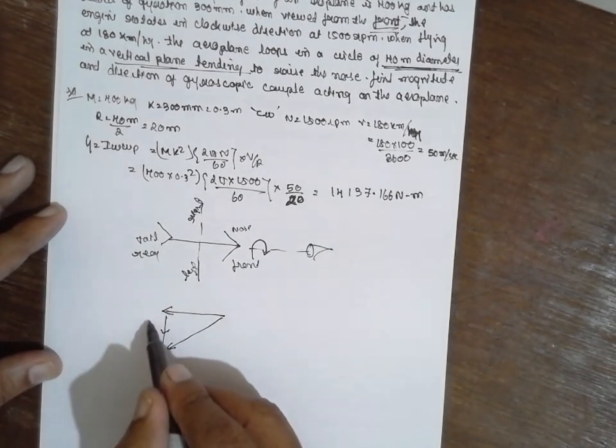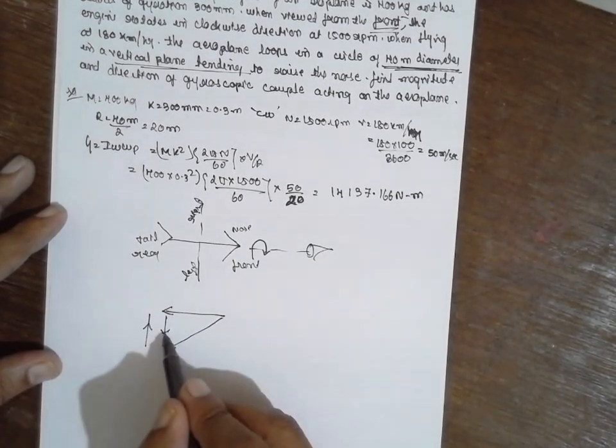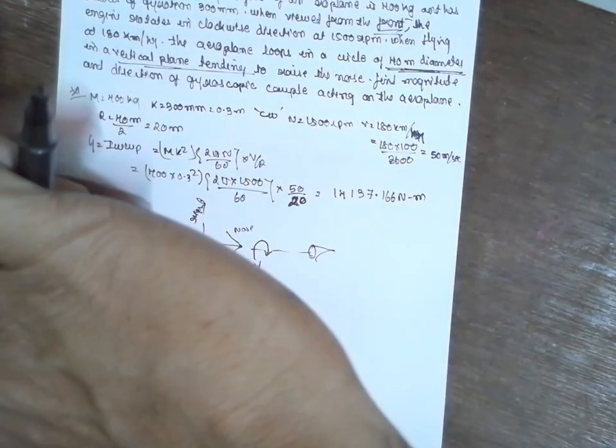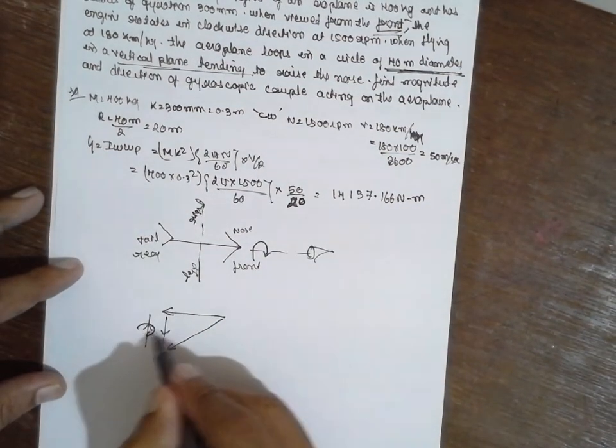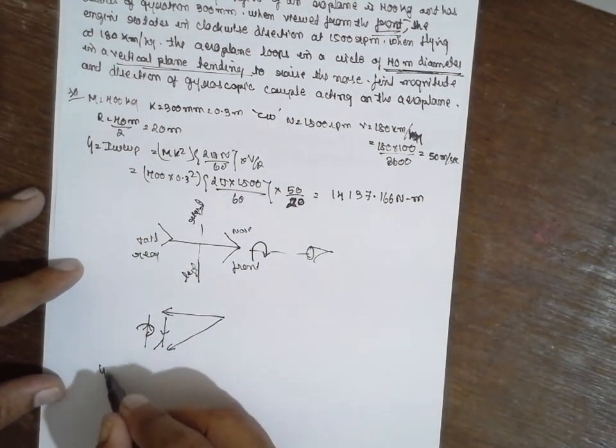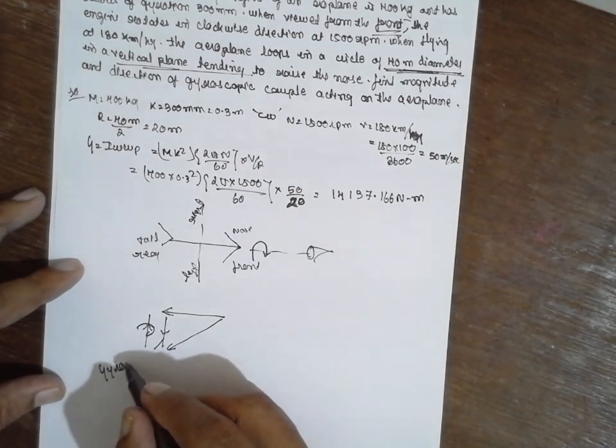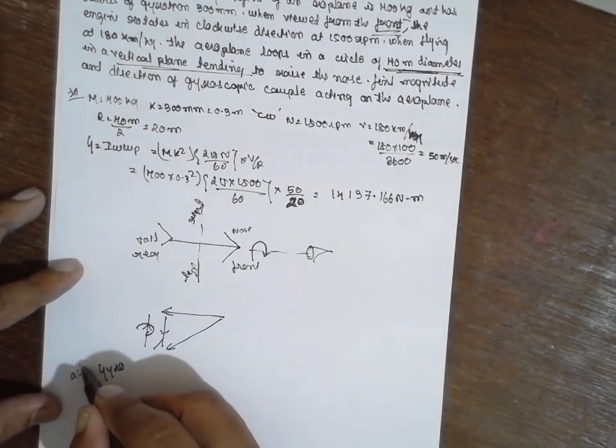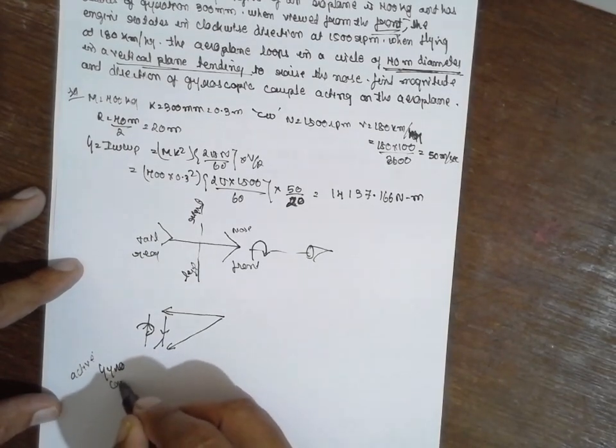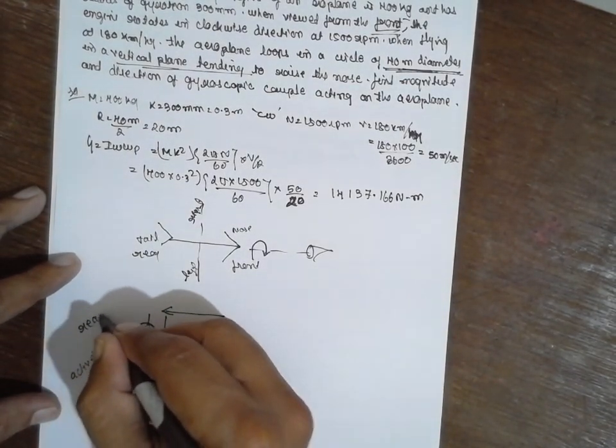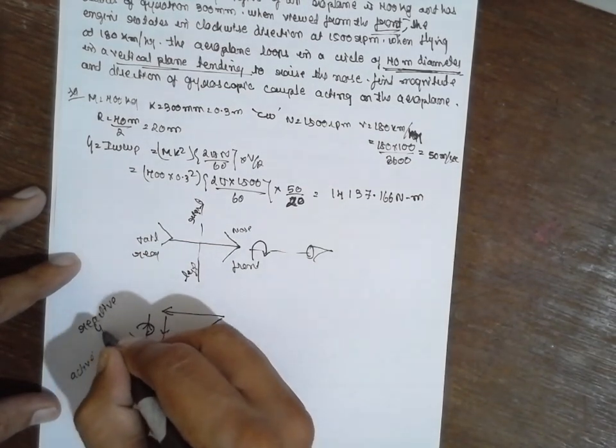Next towards the left. Gyroscopic effect, gyroscopic effect, reactive gyroscopic effect based on this one. You have to draw the diagonal. You have to hold here and the fingers will be curved here. This is the reactive gyrocouple.